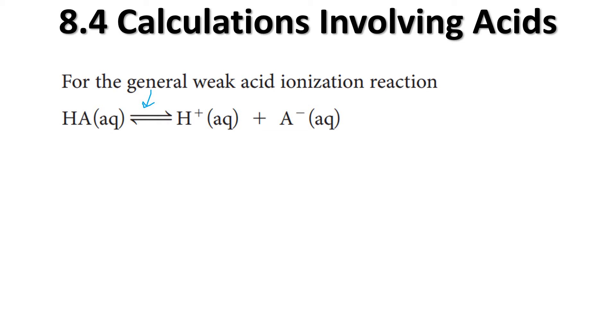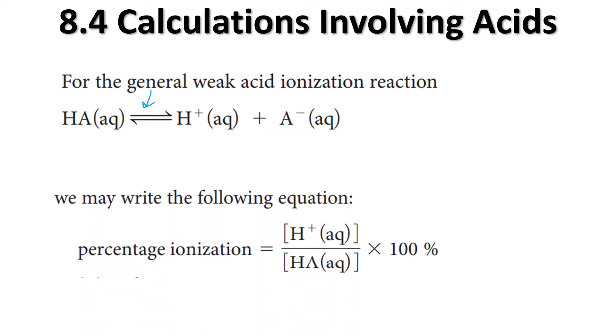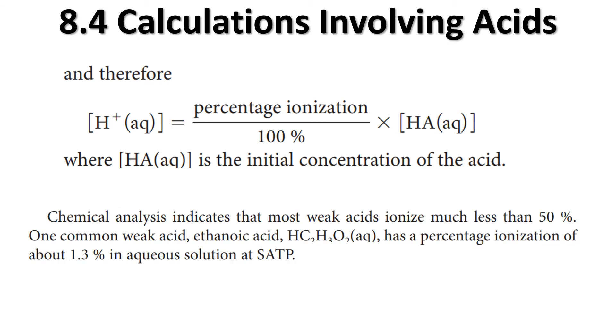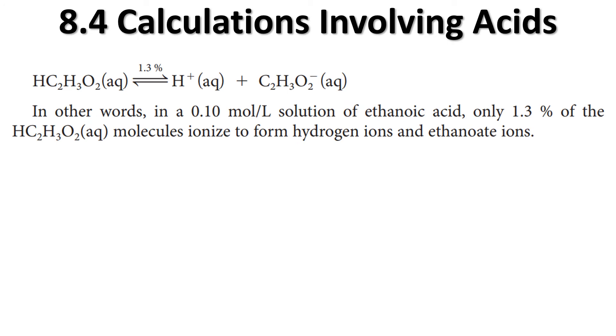Here is our percent ionization equation: concentration of the ionized acid over initial concentration of the acid times 100%. We have our weak acid with our double arrow to indicate it's a weak acid. So we want to write the H+ over the HA. Chemical analysis indicates most weak acids ionize much less than 50%. One common weak acid, ethanoic acid, has a percent ionization of about 1.3 in aqueous solution at SATP. If we do happen to have a 0.1 molar solution, we're simply going to put the 1.3 over 100 and multiply by the 0.1.